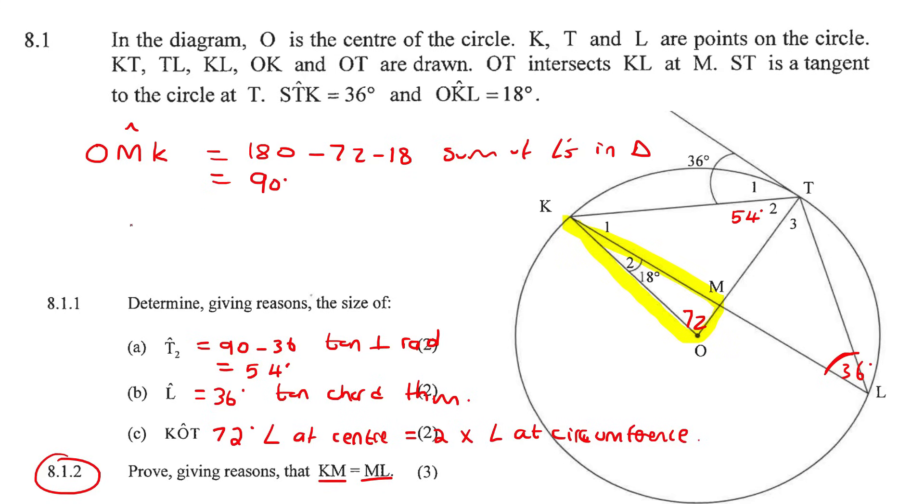And so we can say then that therefore KM is the same as ML. Why? Because we have a line from the center of the circle. Now learners get this confused all the time. What made you say that these two are the same? It's because we have a perpendicular. So line from center perpendicular to chord. Don't say line from center to the midpoint of the chord. That's the other way around.